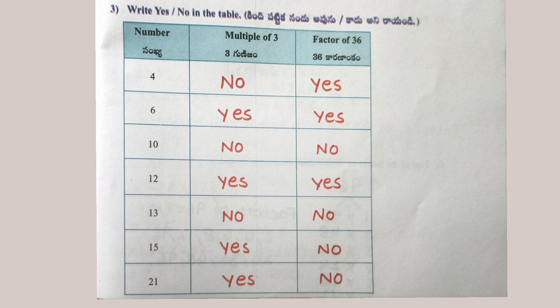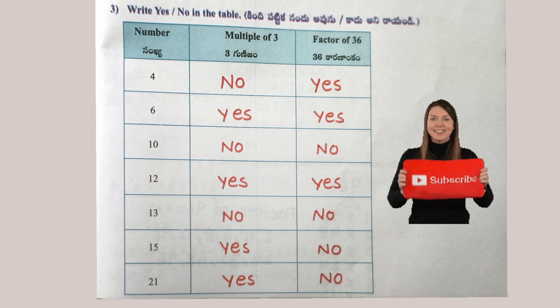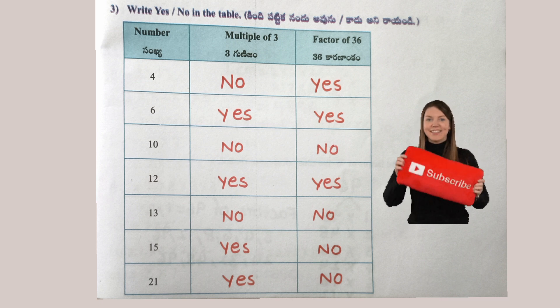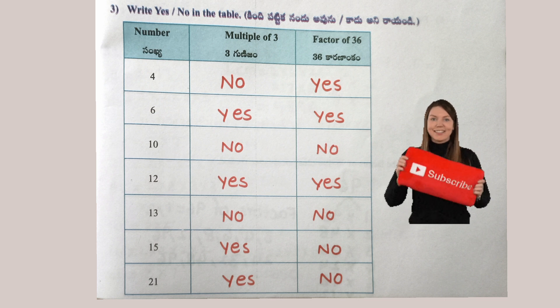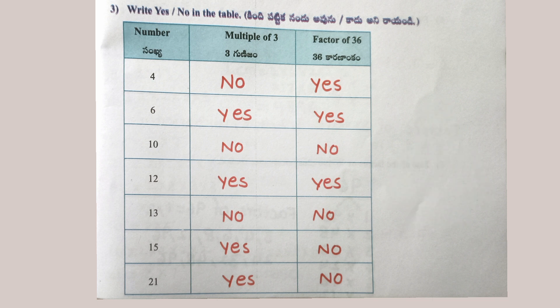Write yes or no in the table. 4: not a multiple of 3, factor of 36. 6: multiple of 3 and factor of 36. 10: not multiple of 3 and not factor of 36. 12: multiple of 3 and factor of 36. 13: not multiple of 3 and not factor of 36. 15: multiple of 3 and not factor of 36. 21: multiple of 3 and not factor of 36.